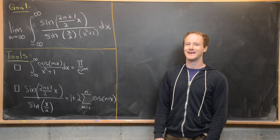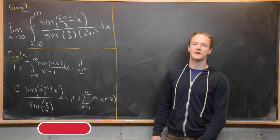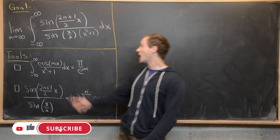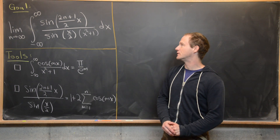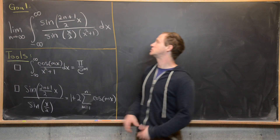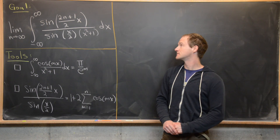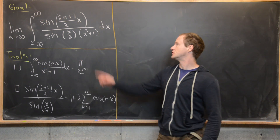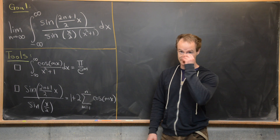In this video we're going to calculate a nice limit. We're going to look at the limit as n goes to infinity of the integral from minus infinity to infinity of sine of (2n+1)/2 times x over sine of x/2 times x squared plus 1, dx.